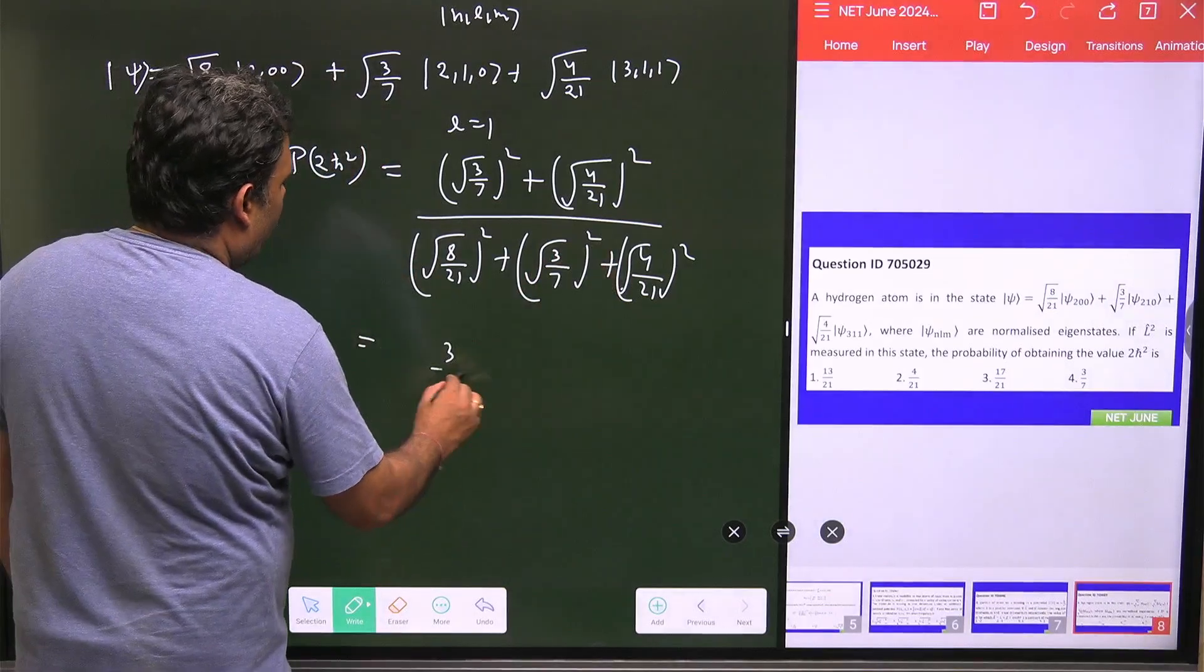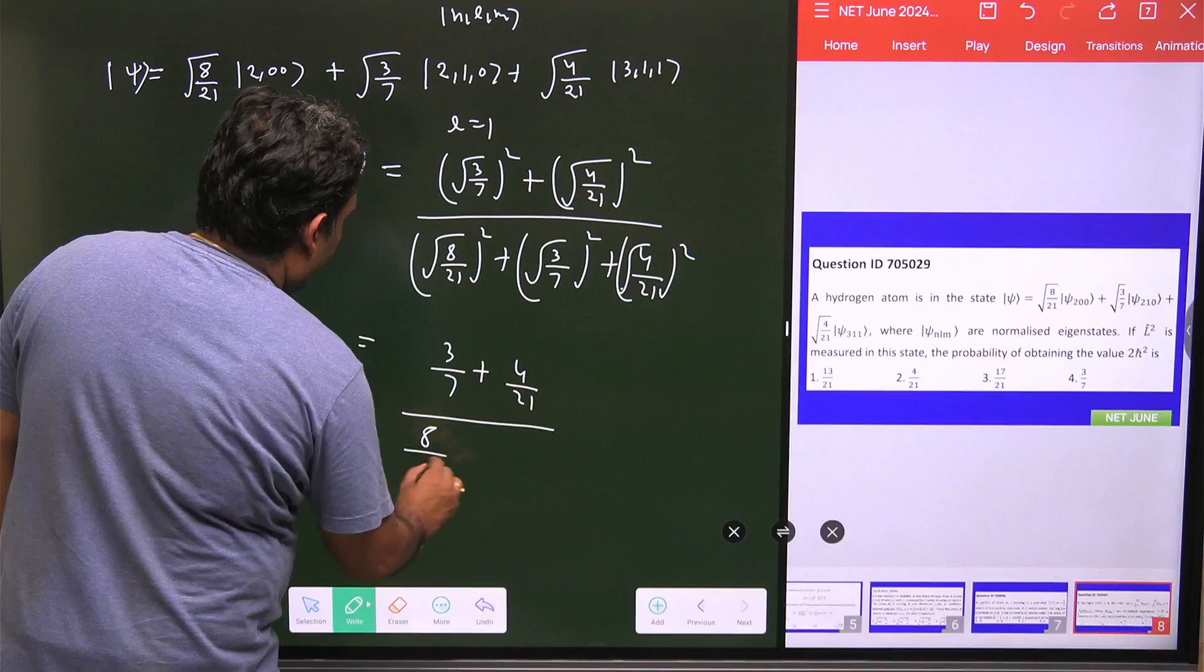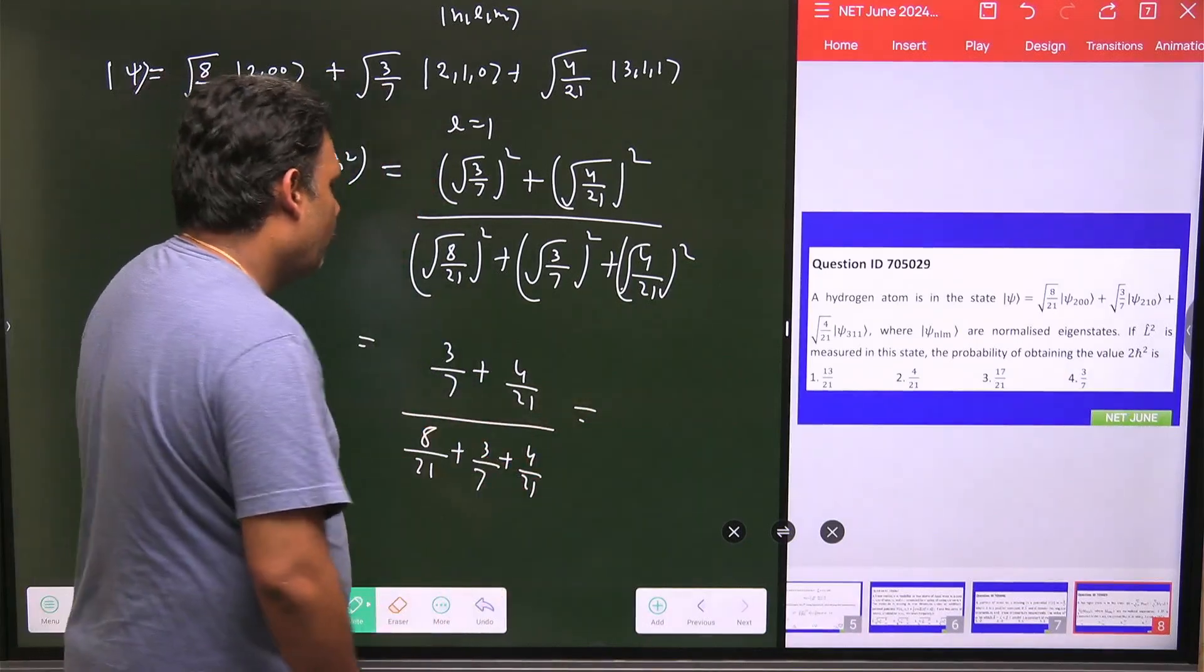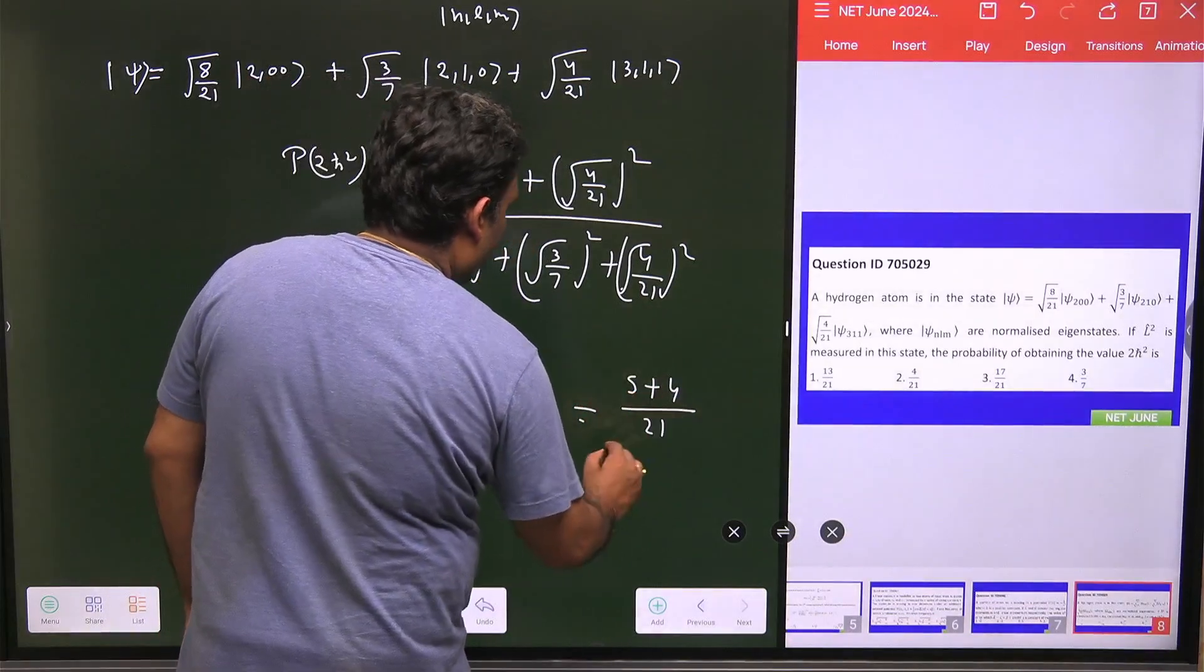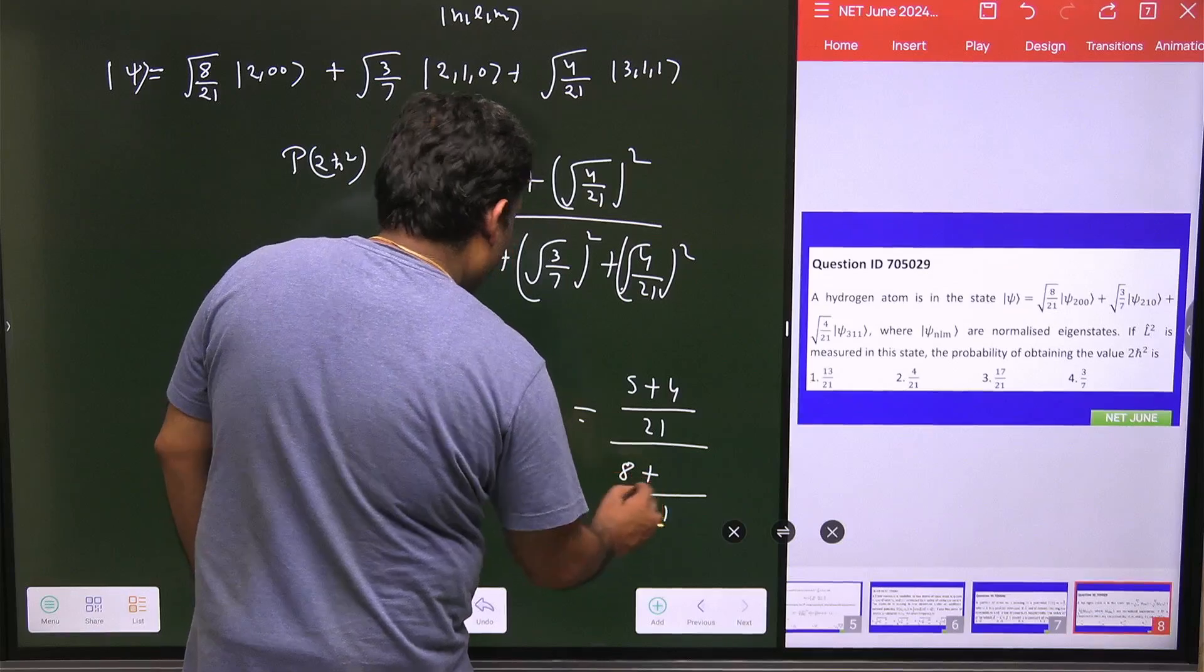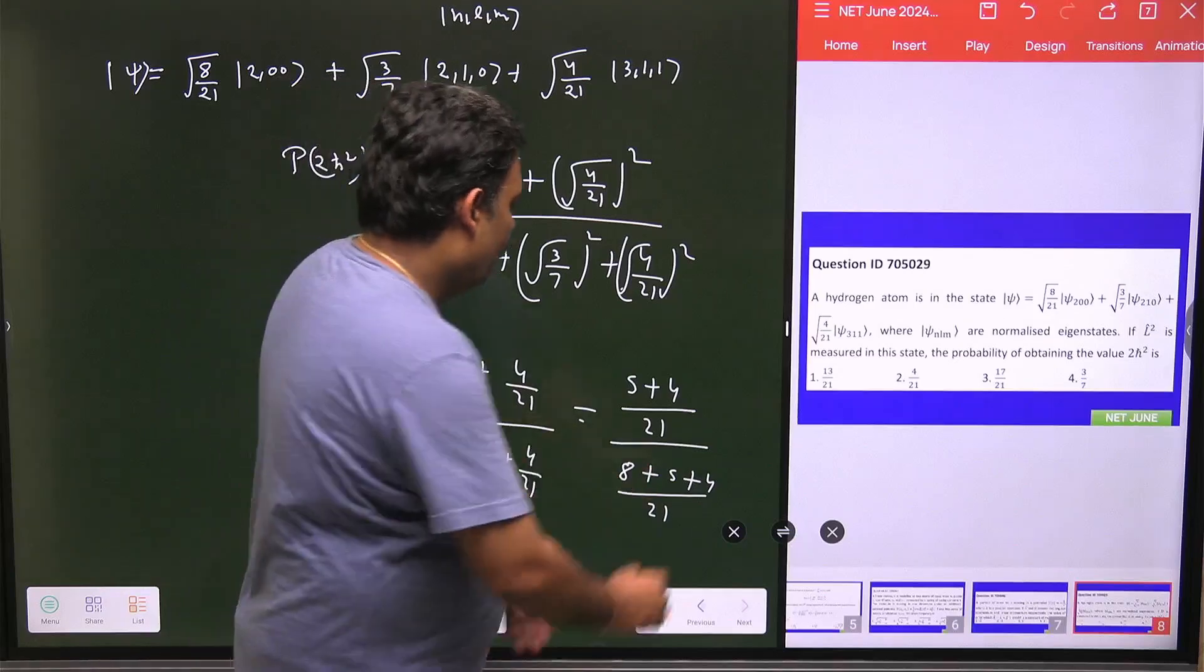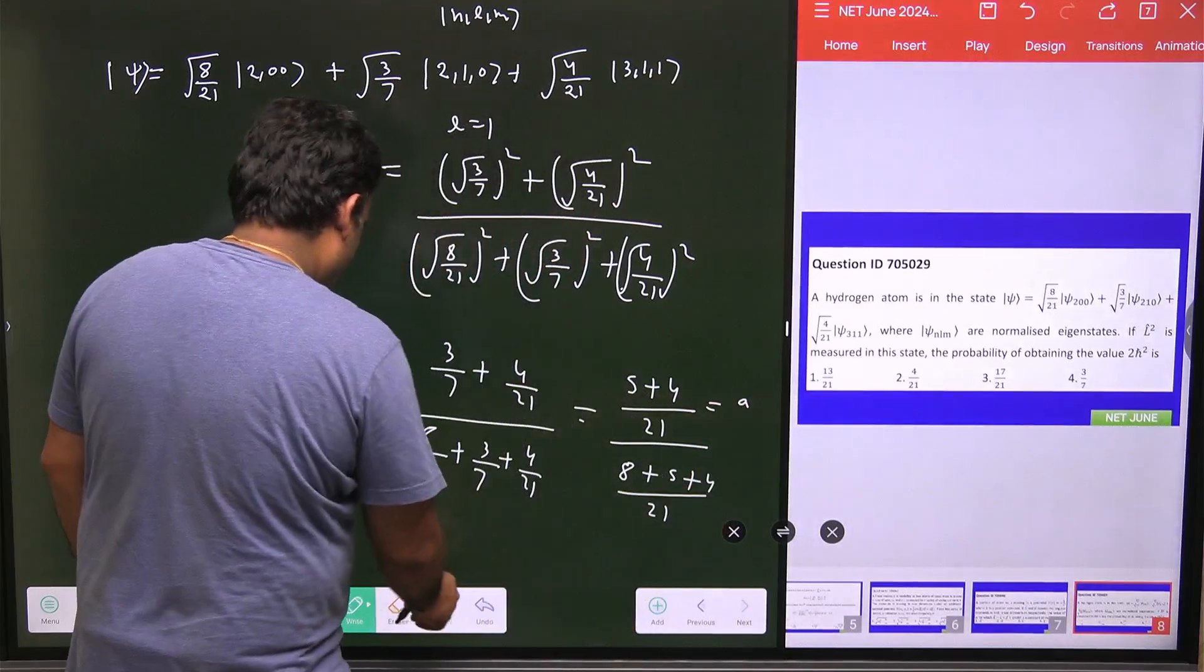So what will be this value? This value is 3/7 plus 4/21, and here is 8/21, 3/7 plus 4/21. And if it is normalized then obviously this value will come to 1, and here is 21, and that will be 9 plus 4 by 21, and here this will be 21, 8 plus 9 plus 4. And this value is equal to such that we have this value is basically 13.